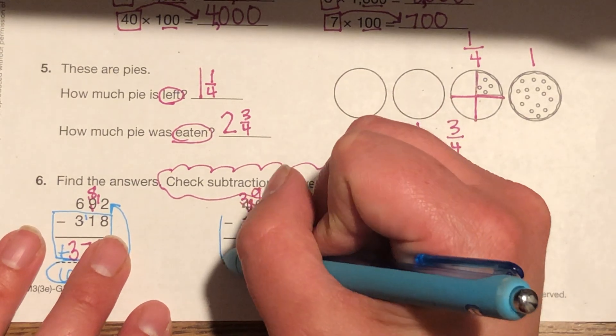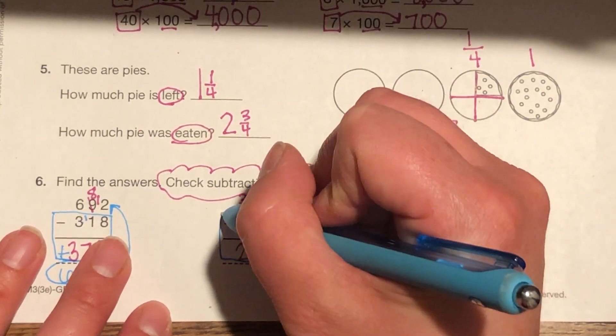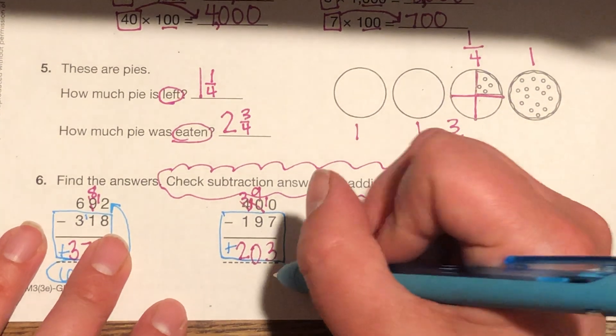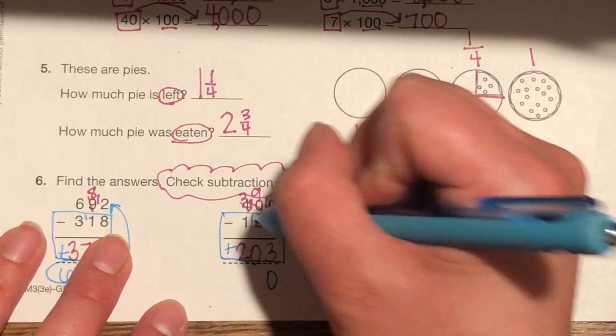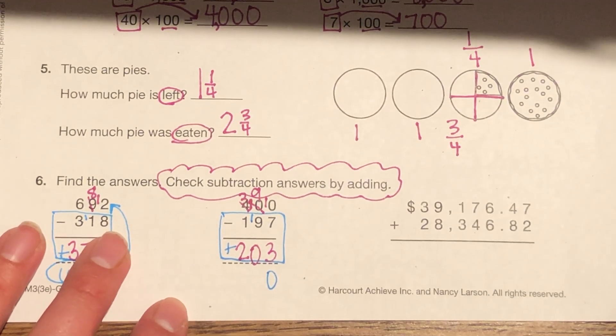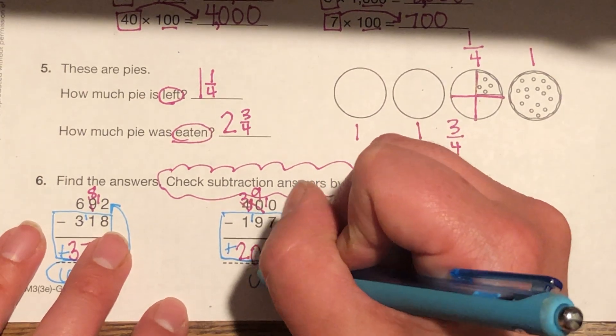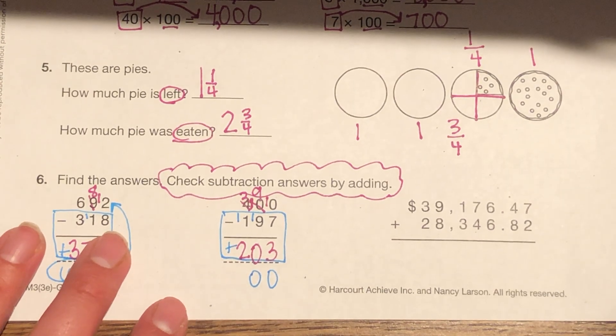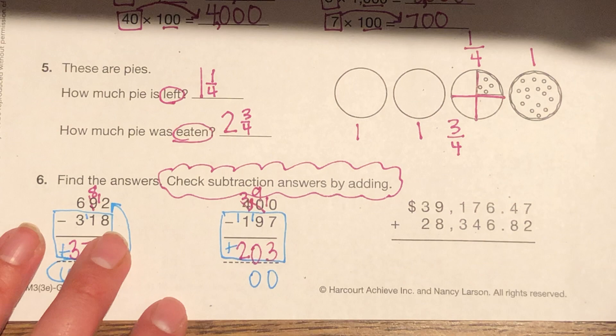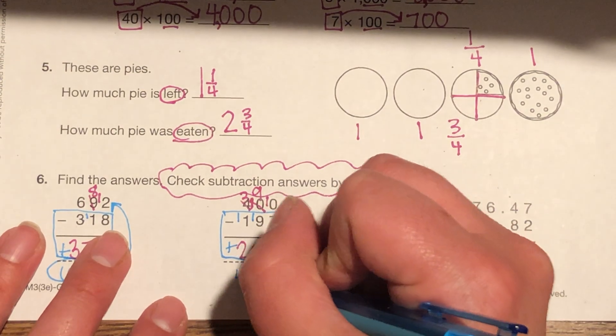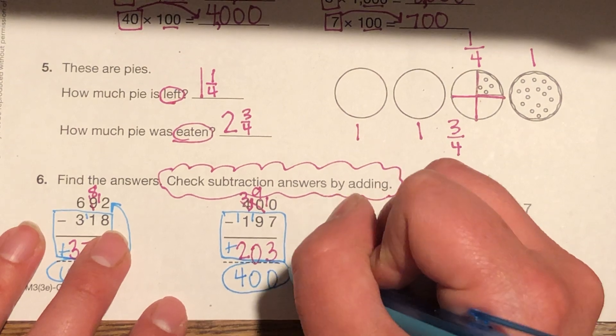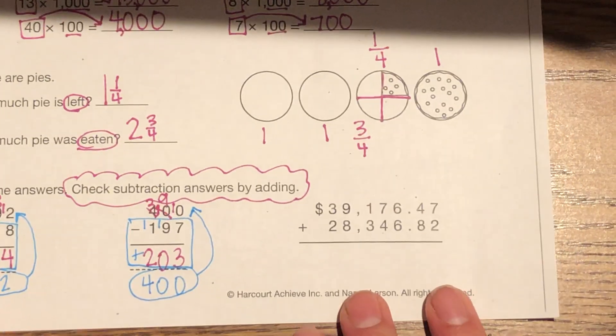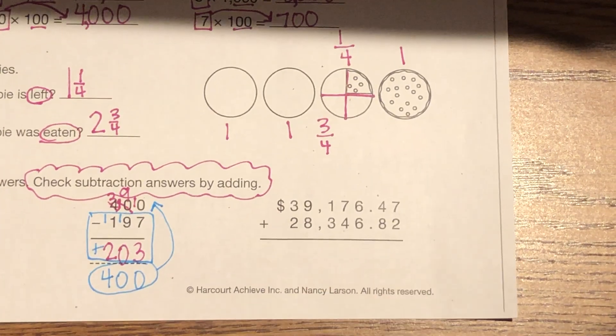But look at that beautiful little cloud reminding me to check my answers by adding. What's seven plus three? Ten, so put my ten, zero, carry the one. One plus nine is ten, plus zero is ten. Carry my one. One plus one is two. Two plus two is four. Here's my answer. Is it the same? It is! We did it! Virtual high five, boys and girls.